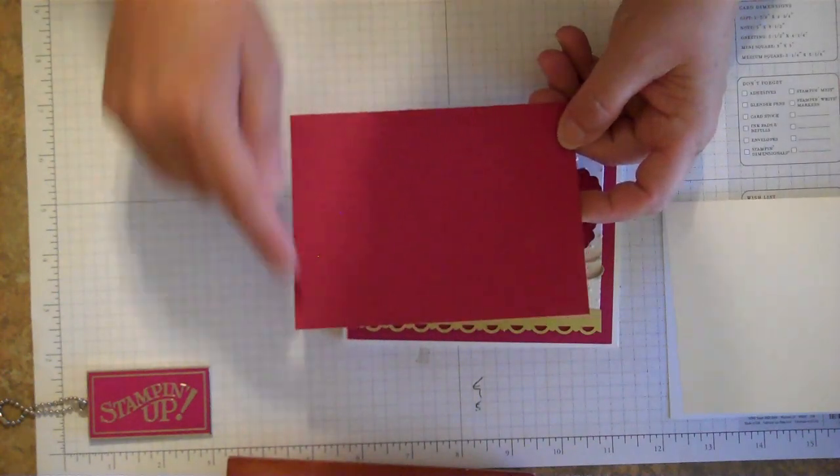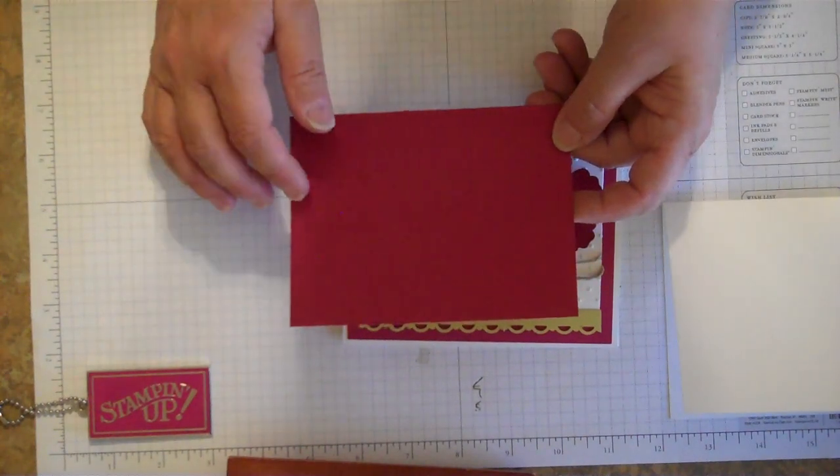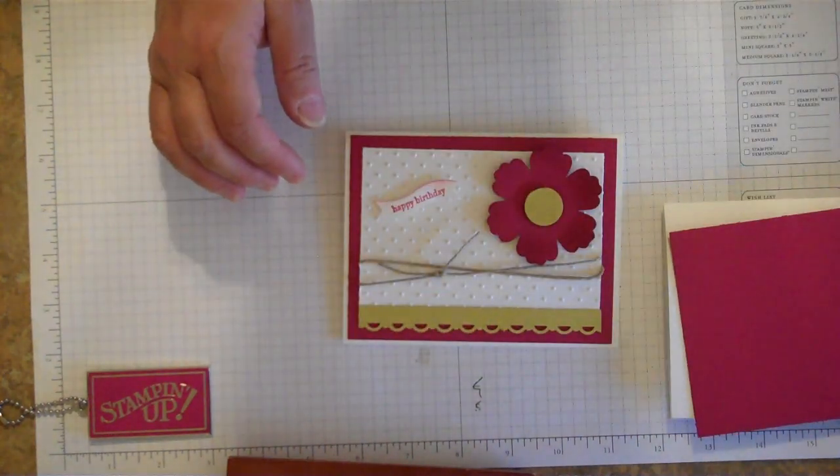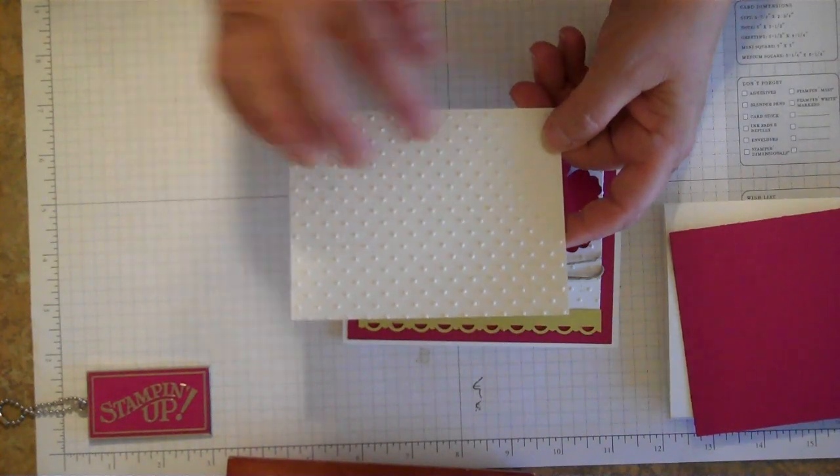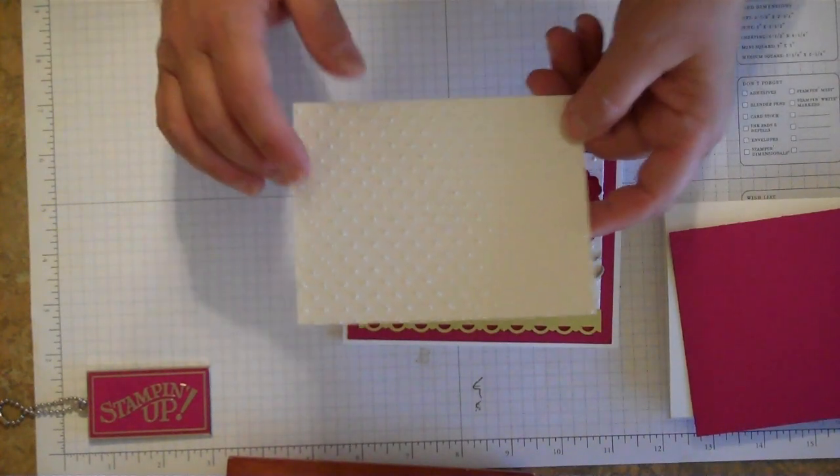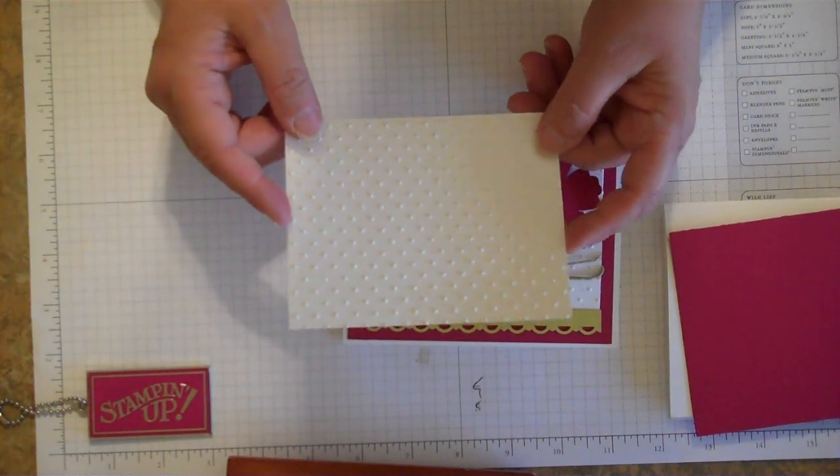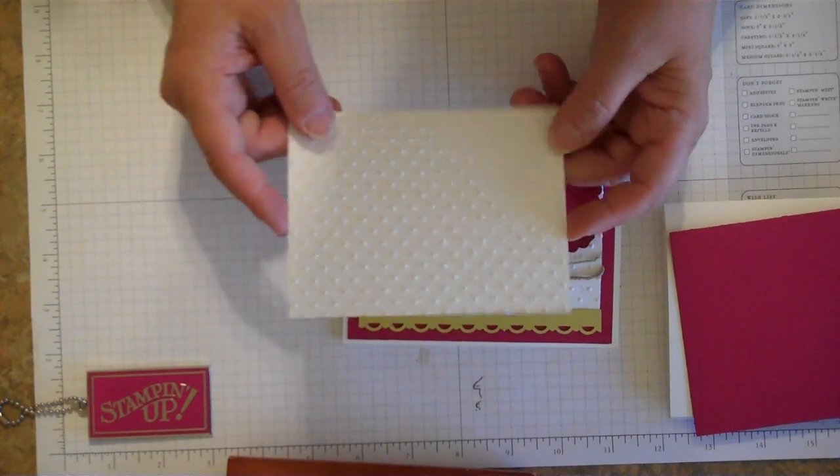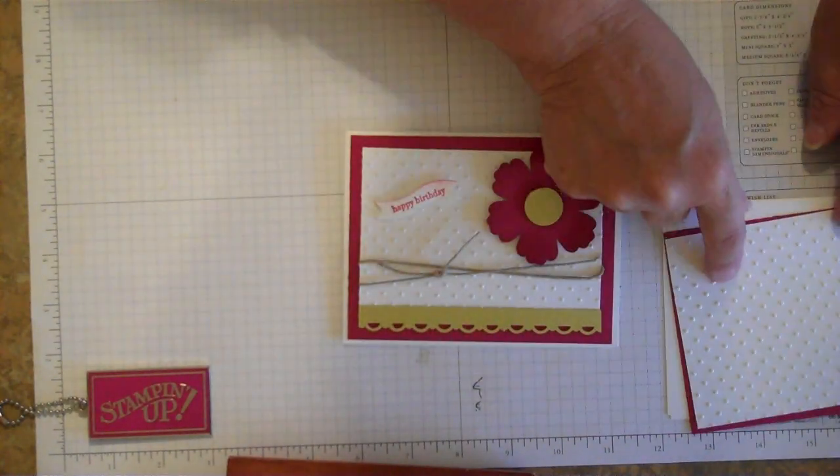This is measured 5¼ by 4. And then the next piece that we're using is going to be 5 by 3¾ and this is on Whisper White. I've gone ahead and used the perfect polka dots embossing folder already to make this textured type of card. So this will be our last layer on that.